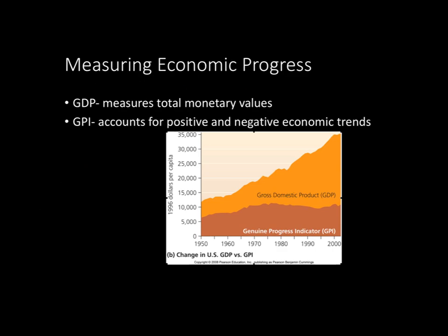Now let's look at measuring economic progress. We're all probably familiar with GDP, or gross domestic product, which measures total monetary values for a country in one entire year — a very high number if you're looking at the GDP of the United States. However, GDP doesn't take into account negative economic surges, such as crime or prisons. Environmental scientists came up with the GPI, or Genuine Progress Indicator. The difference is that the GPI picks up the slack the GDP left off — it accounts for positive and negative economic trends, adding in volunteer work and other things without economic value, and subtracting negative impacts such as crime and pollution.